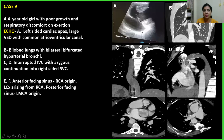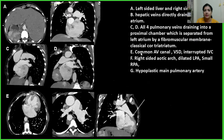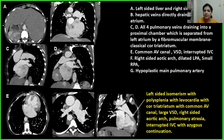Case 9: A four-year-old girl with poor growth. On echo, left-sided cardiac apex, large VSD, and common AV canal were seen. CT showed bilateral bilobed lungs, bilateral bifurcated hyparterial bronchi, interrupted IVC with azygous continuation into right-sided SVC. The anterior-facing sinus gave origin to RCA, and LCX originated from the RCA; the posterior-facing sinus gave origin to LMCA. Left-sided liver and right-sided spleen, hepatic veins draining directly, and pulmonary veins drained into a proximal chamber separated by a fibromuscular band — classical cor triatriatum. Also common AV canal, VSD, interrupted IVC, and hypoplastic pulmonary arteries. This was a case of left-sided isomerism with other associated findings.